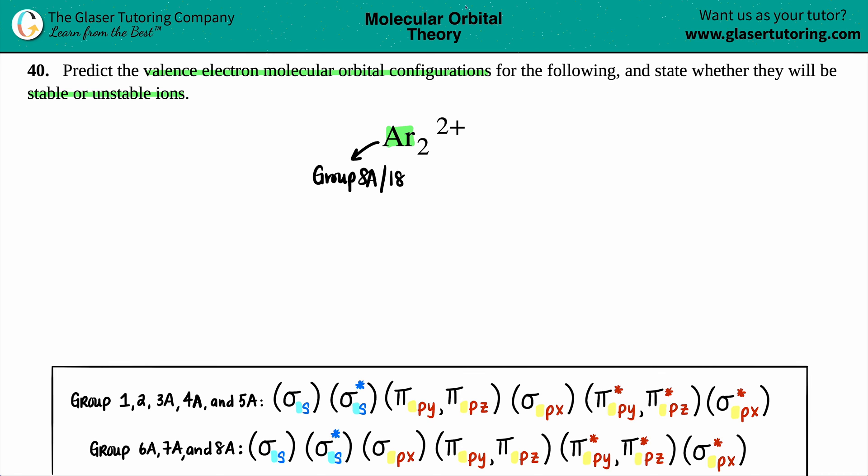It's a noble gas, but the lucky number here is 8 because argon has 8 valence electrons. We have two of them, so if you got twice as many argons, you got twice as many valence electrons. I have 2 argons times 8 valence electrons, which is a total of 16 valence electrons.